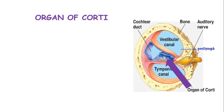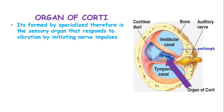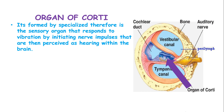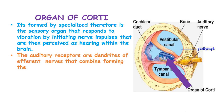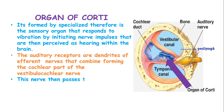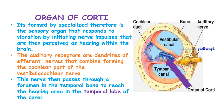The organ of Corti is located in the cochlea. It is formed by specialist cells and is the sensory organ which responds to vibration by initiating nerve impulses that are then perceived as hearing within the brain. The auditory receptors are dendrites of afferent nerves which combine to form the cochlear part of the vestibulocochlear nerve. This nerve then passes through a foramen of the temporal bone to reach the hearing area in the temporal lobe of the cerebrum.